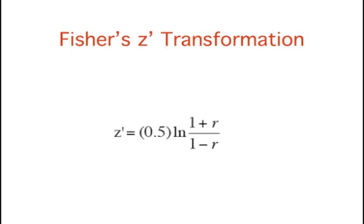The details of this transformation are not important for present purposes. The critical thing is that this transformation produces a variable that is normally distributed.